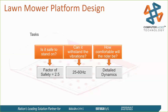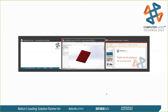We're going to leverage simulation to take those types of things into account. The way we're going to do this is with three simple steps. First, we want to make sure it's safe to stand on — we'll quantify that with a factor of safety of 2.5, which is fairly standard. Next, we're going to look at can it withstand the vibrations. Most motors vibrate between about 25 and 60 hertz, so we want to make sure any design for this platform has a resonant frequency outside that range. Lastly, we'll put some criteria on how comfortable the rider will be. So first and foremost, let's hop into SolidWorks.